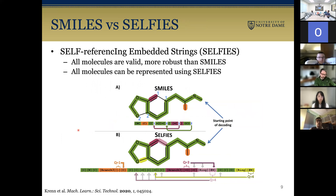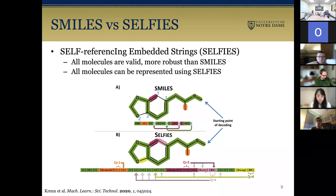More recently, another string-based representation is SELFIES, which stands for Self-Referencing Embedded Strings. With SELFIES, all molecules that have a SELFIES string are considered valid molecules — this is much more robust than SMILES strings, and all molecules can be represented using SELFIES. Shown here are two figures A and B of the same structure: the SMILES string denotes rings by numbered indices, whereas in the SELFIES string, ring closing events are defined differently using a ring token.